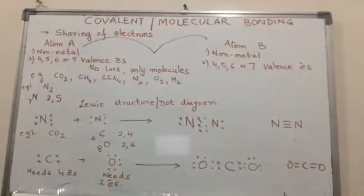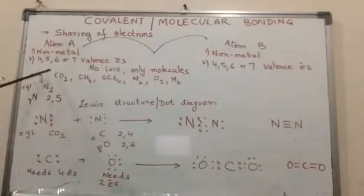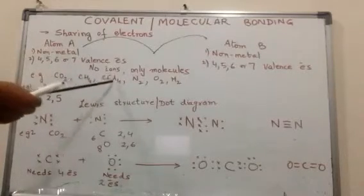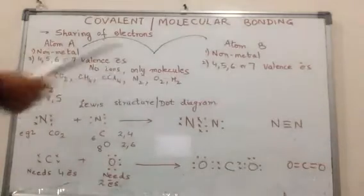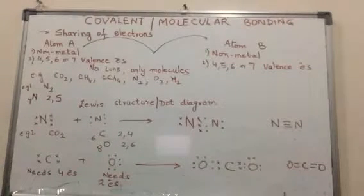Typical examples are carbon dioxide, methane, carbon tetrachloride, nitrogen, oxygen, hydrogen, and many more. Most organic compounds have covalent or molecular bonding. Since this type of bonding is very important to understand,